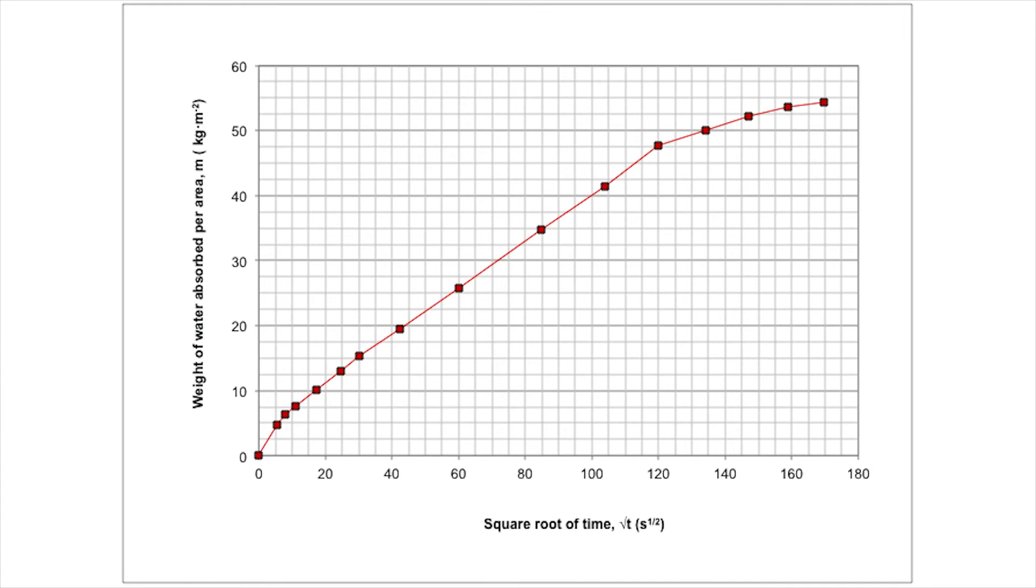Next, the weight of water absorbed per unit area is plotted as a function of the square root of time in seconds. The slope of the straight part of this curve is the water absorption coefficient, a, in kilograms per square meter per square root of seconds.